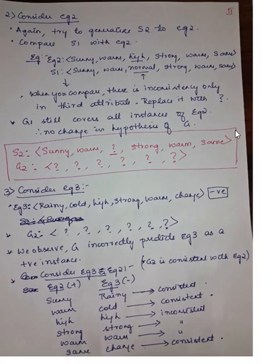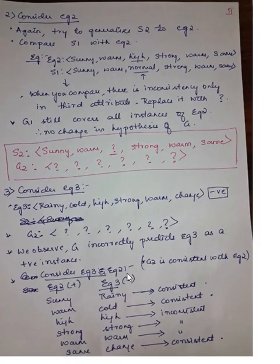This is the hypothesis obtained from example 2. Now consider example 3. For convenience, the values are written here. What you have to note is that this is a negative instance. Let us discuss about the generic hypothesis. The previous generic hypothesis G2 is all question marks.